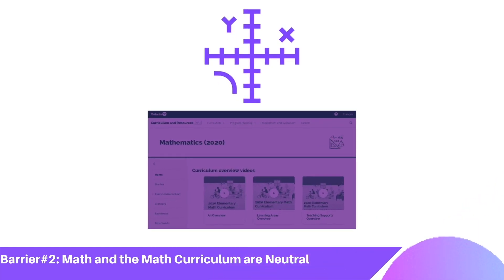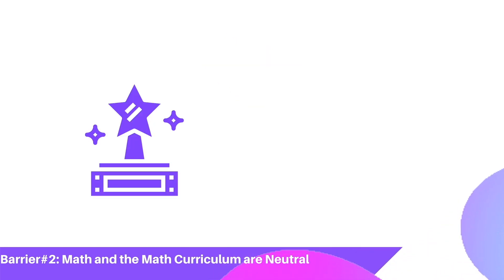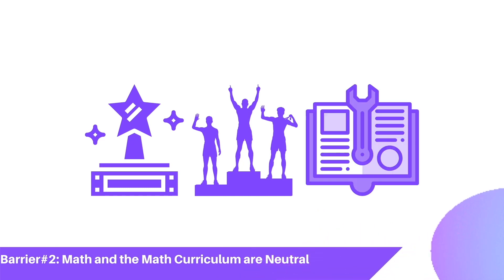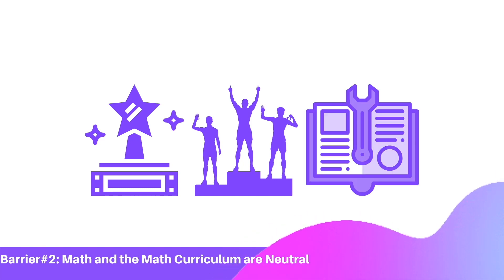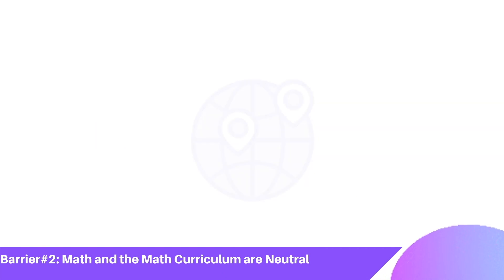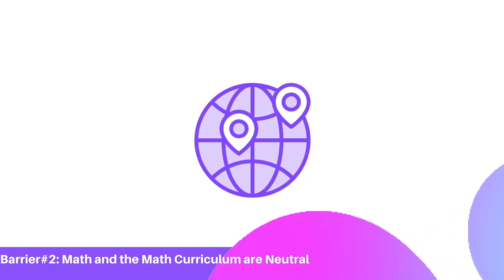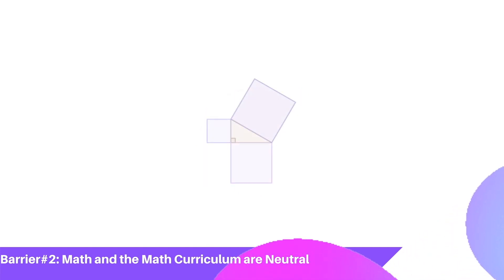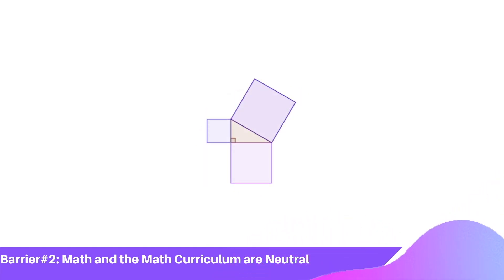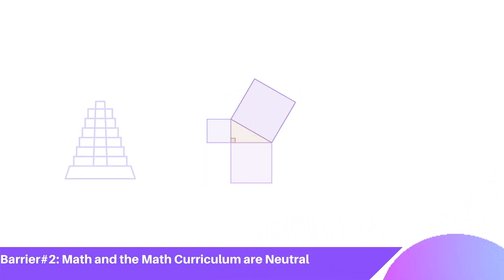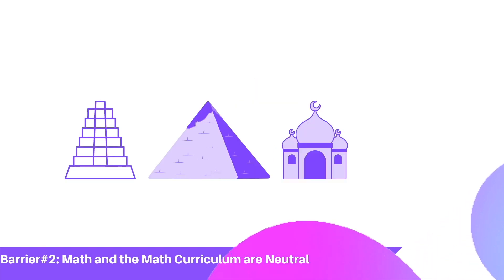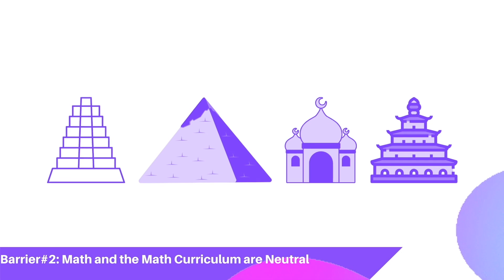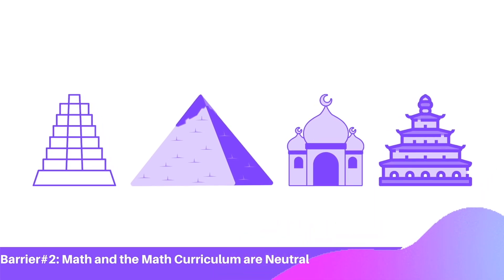Barrier number two: math and the math curriculum are not neutral. What is valued as mathematical, who is given credit for mathematical knowledge, and how that mathematical knowledge is shared within the curriculum does not reflect global contributions to mathematics. For example, when we teach concepts like the Pythagorean theorem and exclude recognition of Babylon, Egypt, India, and China, whose civilizations uncovered this relationship centuries prior, we uphold a colonial worldview.